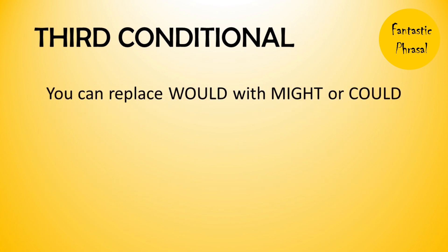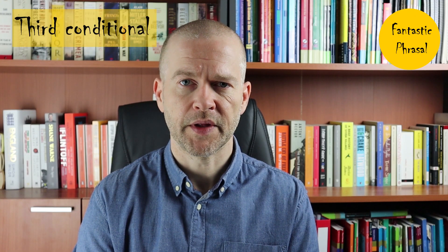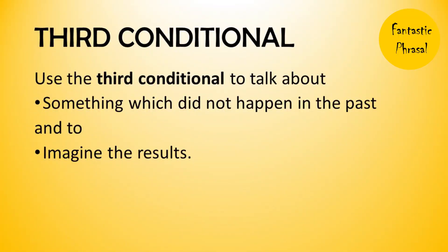It is also possible to replace 'would' with 'could' or 'might'. This shows that the imaginary result of the conditional clause is less certain. For example: If I had gone to London, I might have visited the British Museum. So remember, use the third conditional to talk about something which did not happen in the past, and to imagine the results.